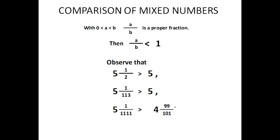Comparison of mixed numbers. If A and B are positive and A is less than B, then A over B is a proper fraction, which is less than one. Observe: five and one-half is greater than five; five and one over one-thirteen is greater than five. And five and one over one-eleven is greater than four and ninety-nine over one-oh-one, because ninety-nine over one-oh-one is a proper fraction — less than one — so four plus something less than one is still less than five plus any proper fraction.